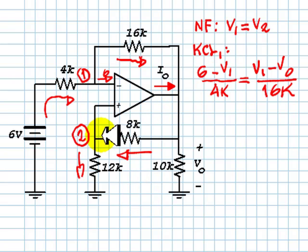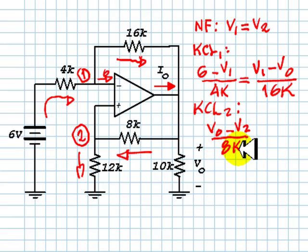And KCL too for this node. Currents that go in: V0 minus V2 over 8 kilos, equal to this current, which is zero because this is an ideal op-amp, plus this one, which is V2 over 12.